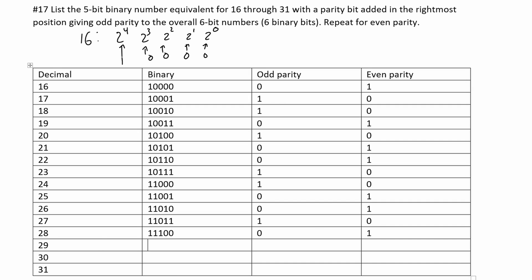29 is just 28 plus 1, so we're going to have 1 1 1 0 1. Our odd parity is going to be a 1 because we have an even number of ones, and our even parity is going to be 0 — again because we have an even number of ones in our binary.